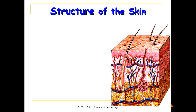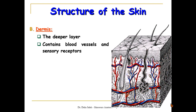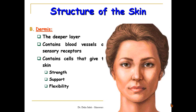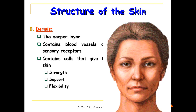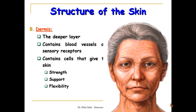The other layer that forms the skin is called the dermis. It is the deeper layer that lies under the epidermis. It contains blood vessels and sensory receptors, and of course it is much thicker than the epidermis. It also contains cells that give the skin its strength, support, and flexibility. When we age, we lose these characters because we lose the collagen and the elasticity of the skin, and with the progress of age, wrinkles appear.